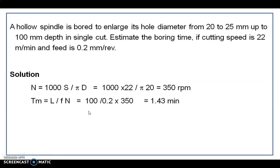It's a very simple problem. Here a hollow spindle is bored to enlarge — it's a boring operation — its hole diameter from 20 to 25 mm up to a depth of 100 mm in a single cut. Estimate the boring time if cutting speed is 22 meters per minute and feed is 0.2 millimeter per revolution.